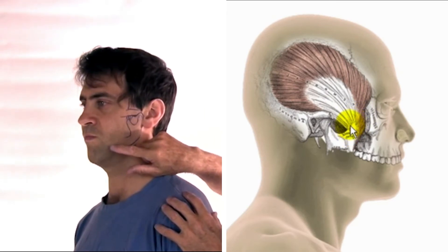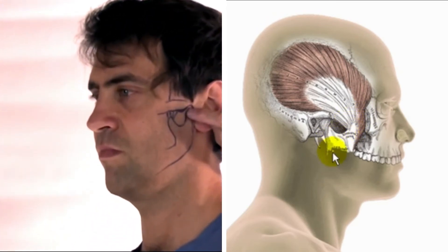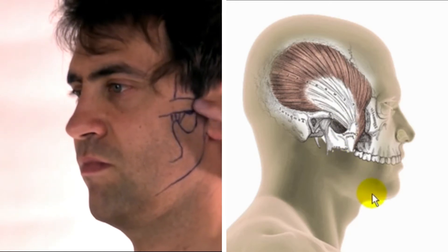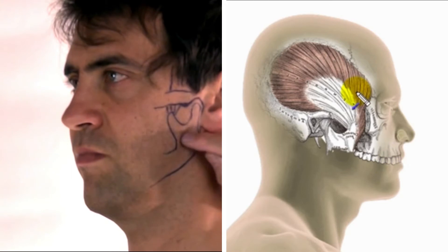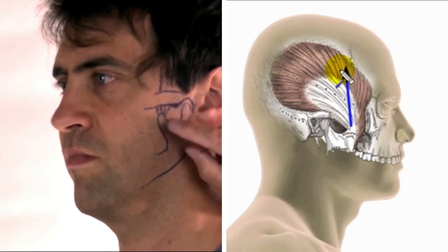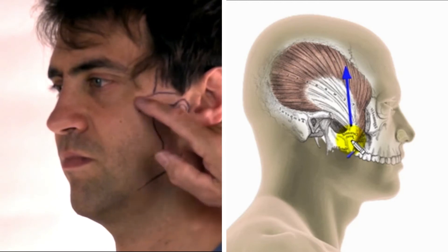Then it inserts into this process which is called the coronoid process, and that's part of the jaw, the lower jaw, the mandible. The muscle, therefore, when it contracts, will pull upwards and close the jaw.